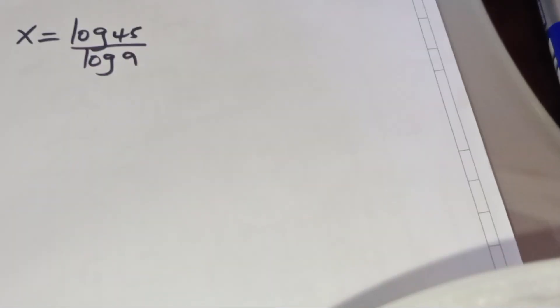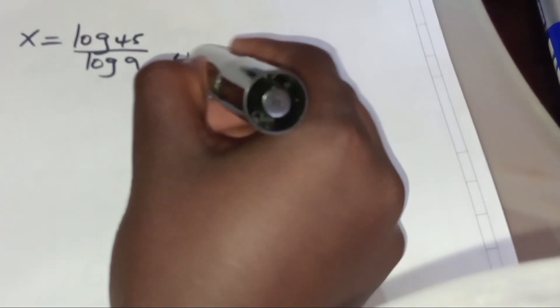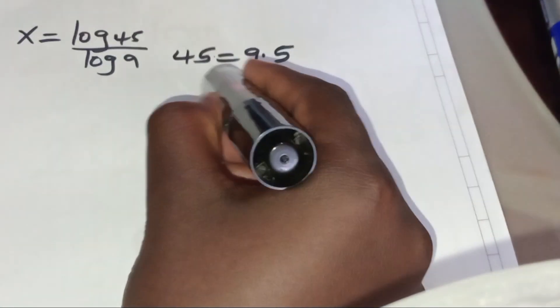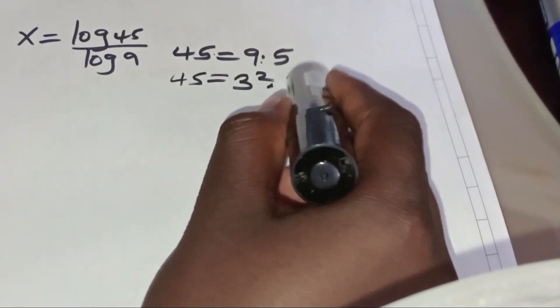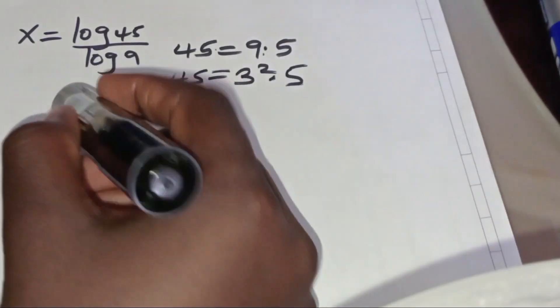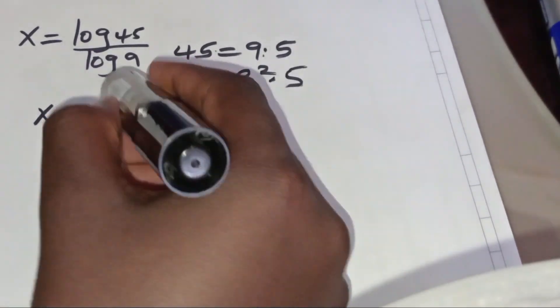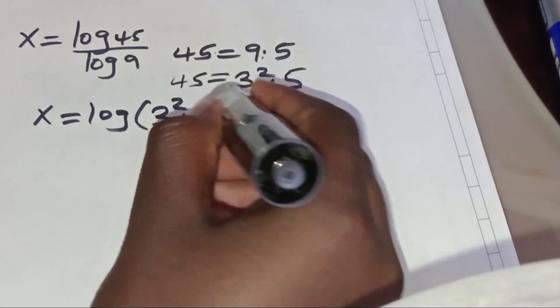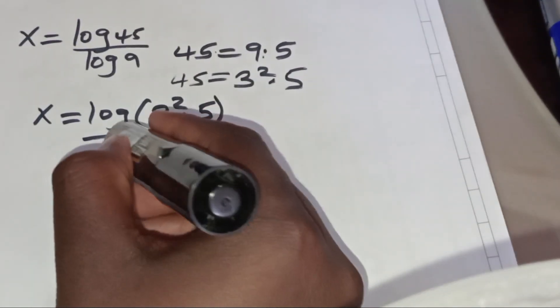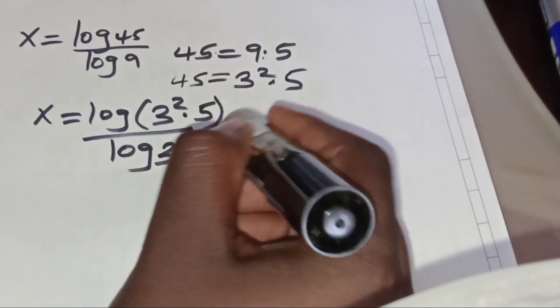We have x equals log 45 divided by log 9. Now, 45 can be expressed as 9 multiplied by 5. We can also express this 9 as 3 to the power of 2, so 45 can be expressed as 3 squared multiplied by 5. Substituting, we have x equals log(3² × 5) divided by log(3²).